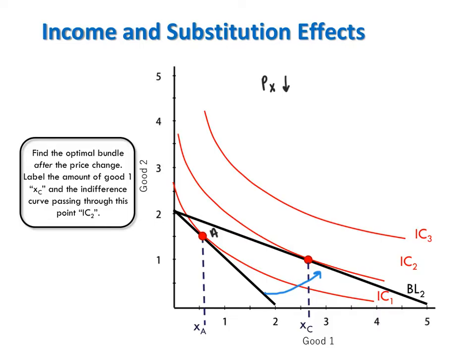The consumer will now be able to move to a higher indifference curve by choosing bundle C on IC2. We can see that this decrease in the price of x makes the consumer better off because he moves to a higher indifference curve.